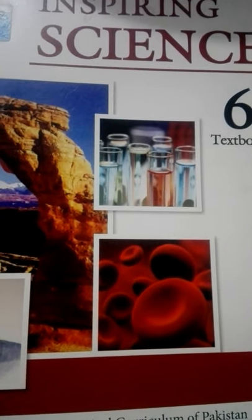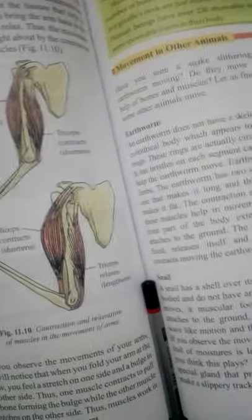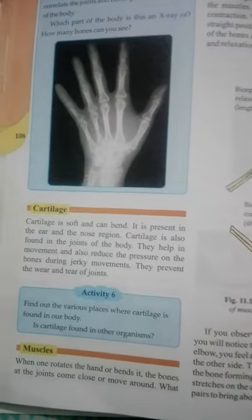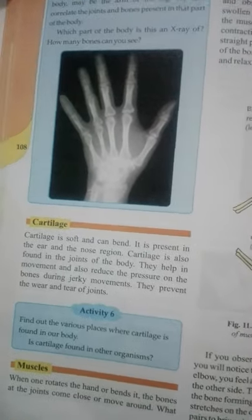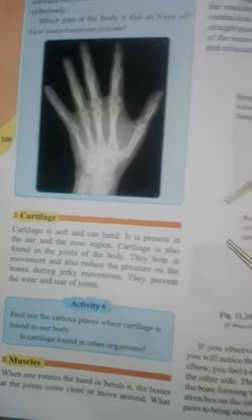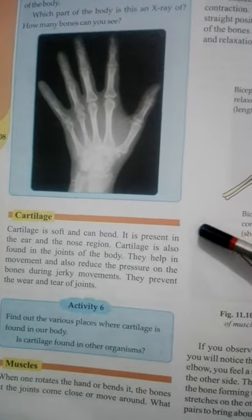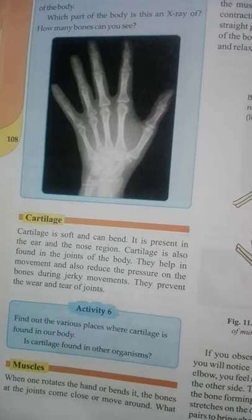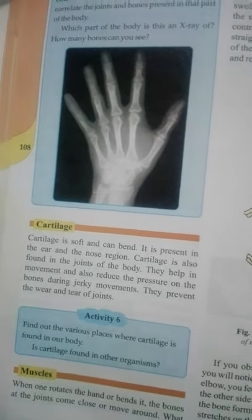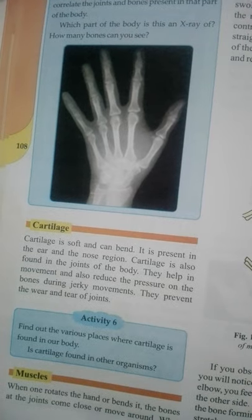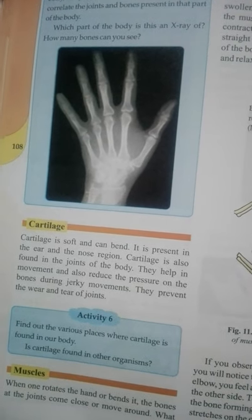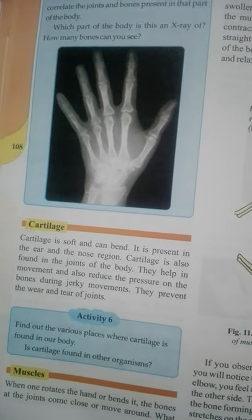Welcome, dear Grade 6 students, hope you are all fine. We are going to read our next topic on page number 108: cartilage. Cartilage is basically soft bone and it can be bent.